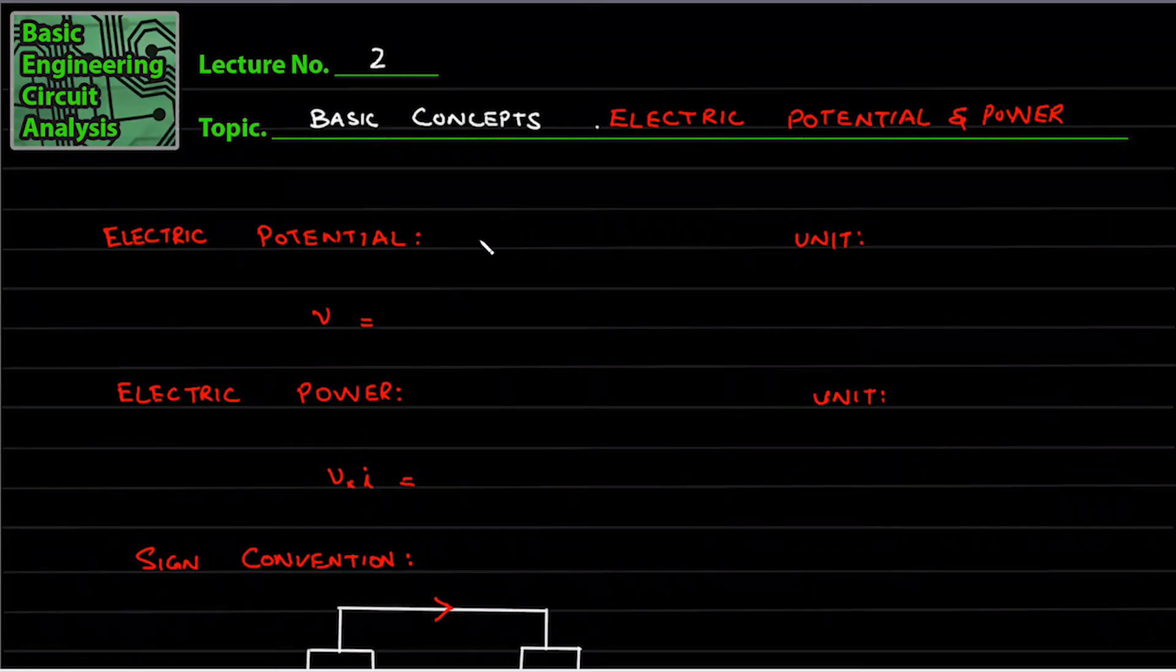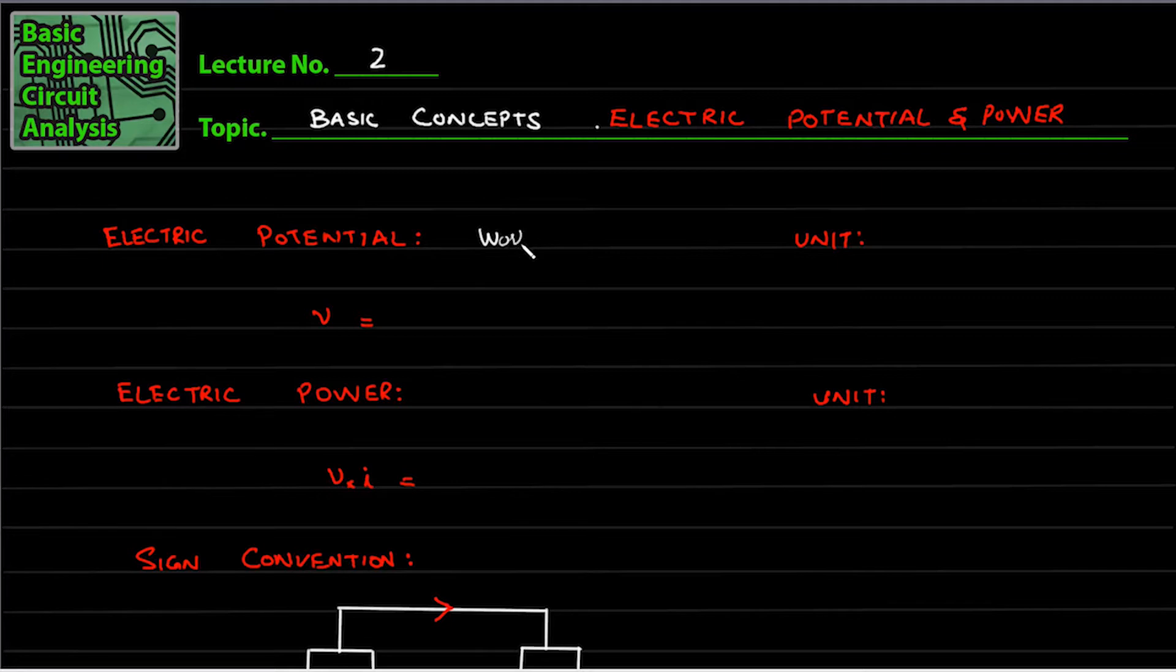With the second lecture we have electric potential and power. Electric potential is basically equal to the work done on unit charge. So basically its unit is volt.